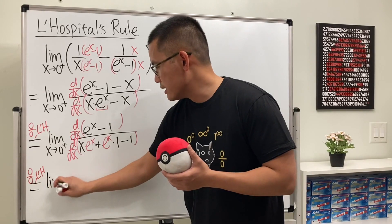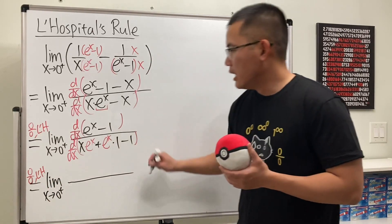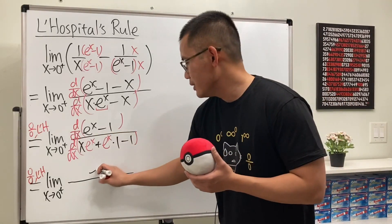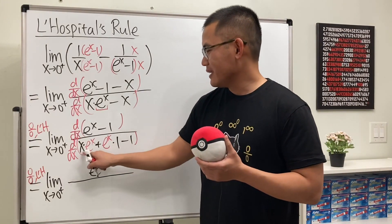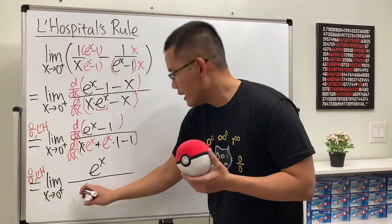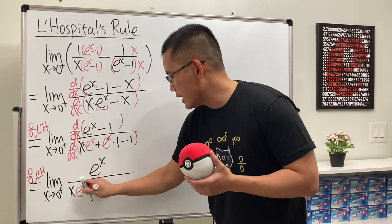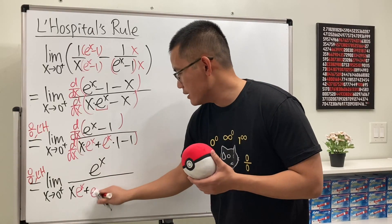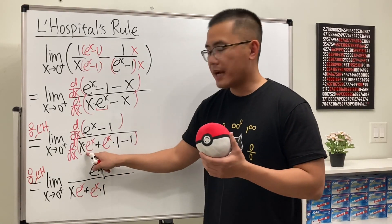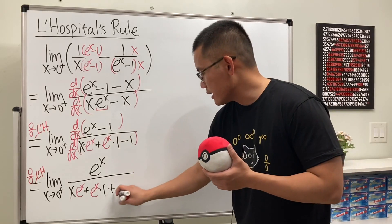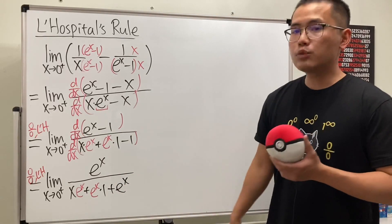So this is going to give us the limit as x approaching 0 plus. On the top, it's just e to the x. It's not going to be 0 anymore. On the bottom, product rule in action. I'll keep the first function, multiply by the derivative of the second. And then we add the second function, multiply by the derivative of the first. And then we differentiate this, that's just another e to the x. And the derivative of minus 1 is just 0.